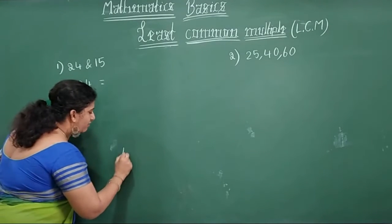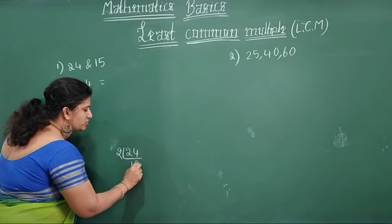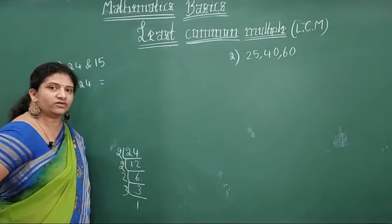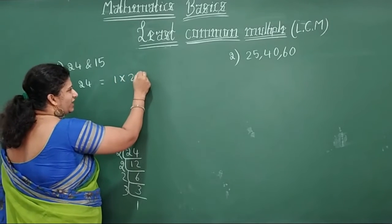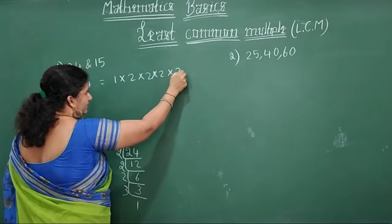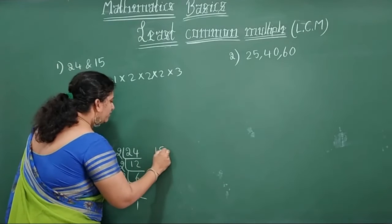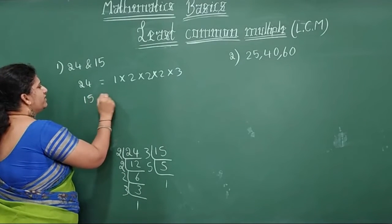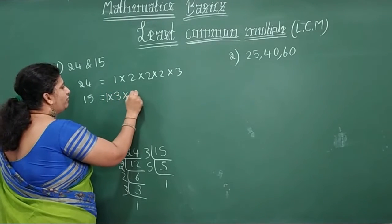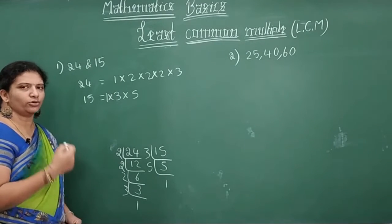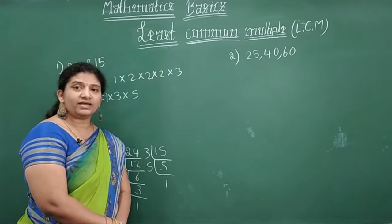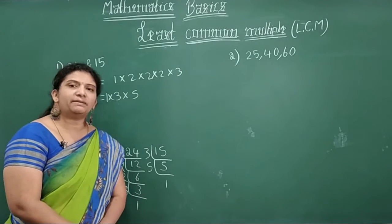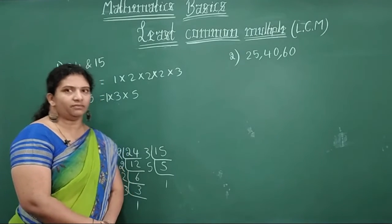Now let's find the LCM of 24 and 15 using the prime factor method. For 24: 2×1=2, 2×2=4, 2×3=6, 2×3=... writing out: 24 = 2 × 2 × 2 × 3. Write all the factors of 24. Now take 15: 15 = 3 × 5. So 15 can be written as 1 × 3 × 5.